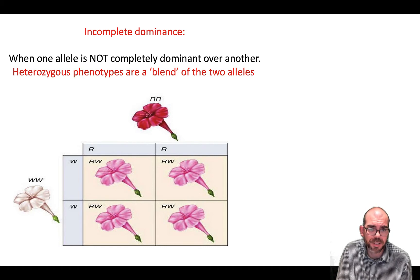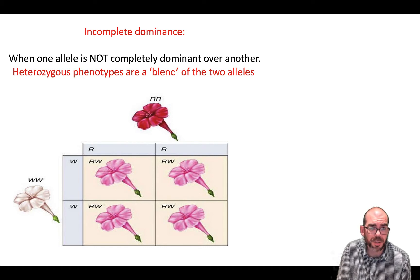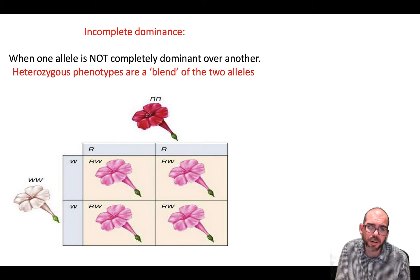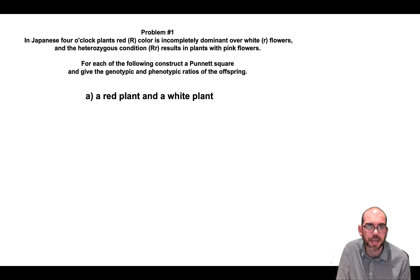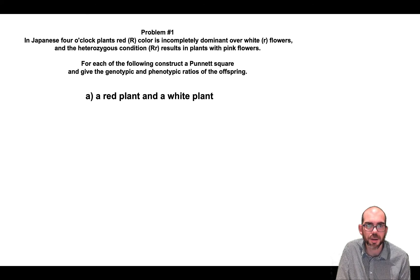With this example of a red flower and a white flower, you can see the offspring is a blend of red and white — pink — and that only occurs in the heterozygote. So we can declare that neither one is completely dominant; it's incompletely dominant. Let's practice solving a Punnett square problem for incomplete dominance. In Japanese 4 o'clock plants, red color is incompletely dominant over white flowers.